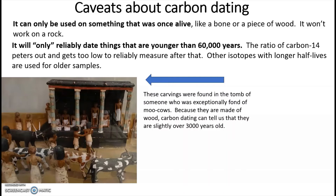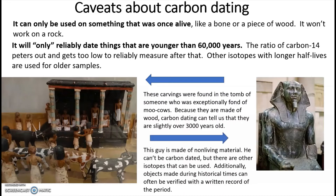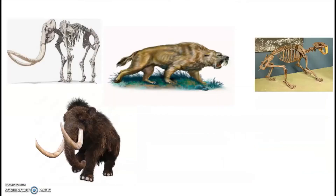The other caveat is that carbon dating will only reliably date things younger than 60,000 years. That sounds old, but the ratio of carbon-14 basically peters out and gets too low — once it's below about one percent, you can't get a good enough reading. As an example, you can't date a stone statue because it's not made of anything that was ever once alive, even if it falls within historical time.